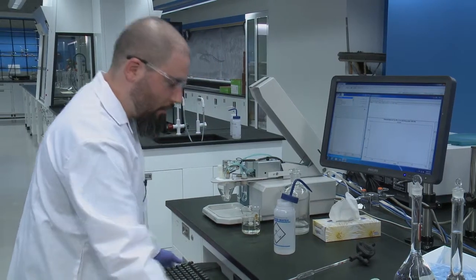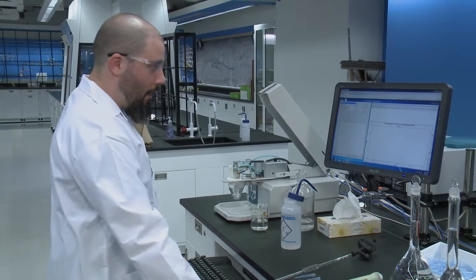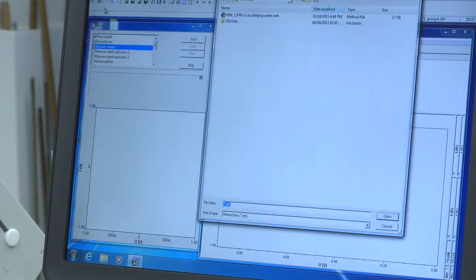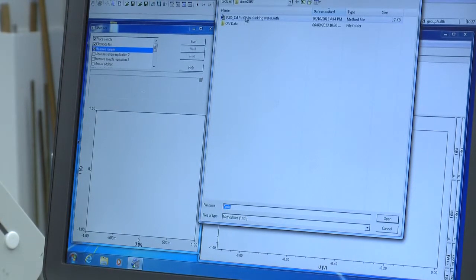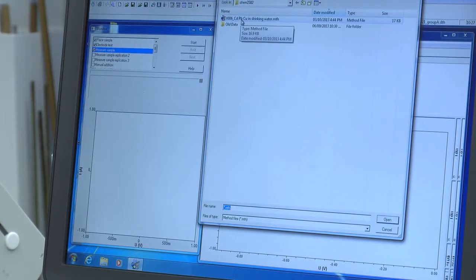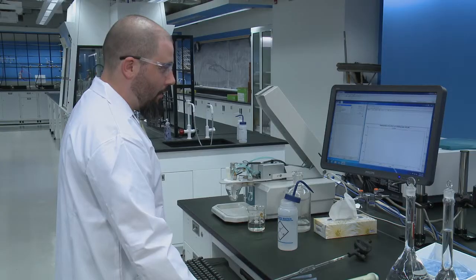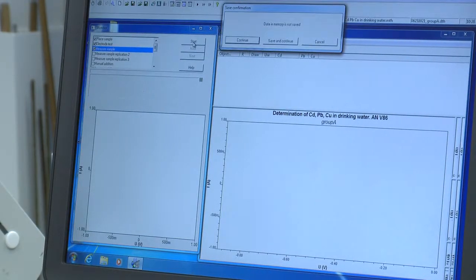And you'll want to start your run on the program. First you want to ensure that you have loaded the correct method. So if you go to file and load, select the cadmium lead and copper in drinking water method and open, and then click start, continue.